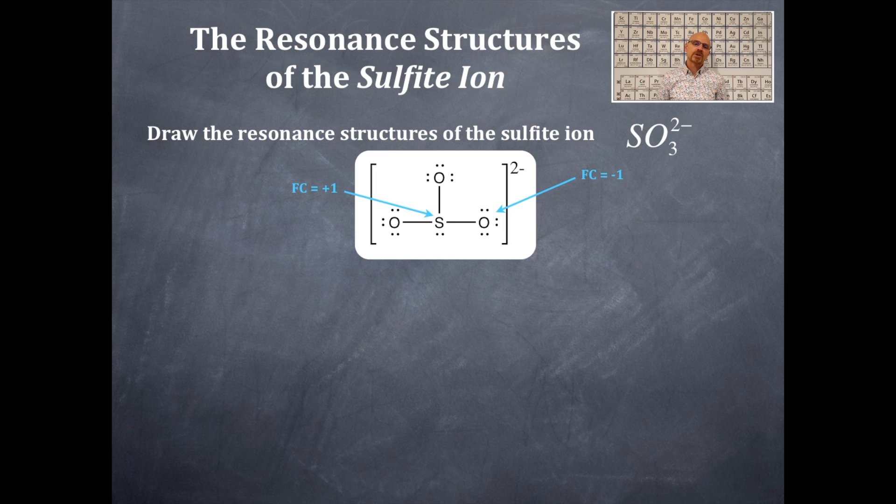Now, notice that there's a formal charge on all three oxygens. That's a total of a negative 3. And then the formal charge on the sulfur, that's a plus 1. So that adds up to a negative 2. That's why the sulfite, it has a SO3 2 minus. That's right.